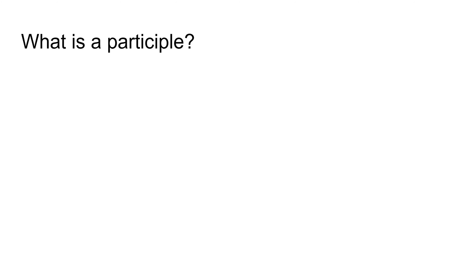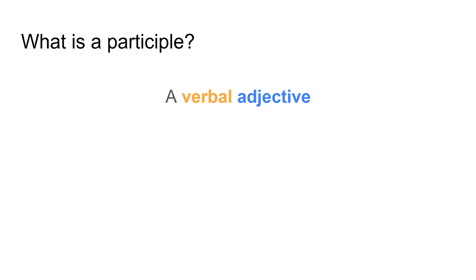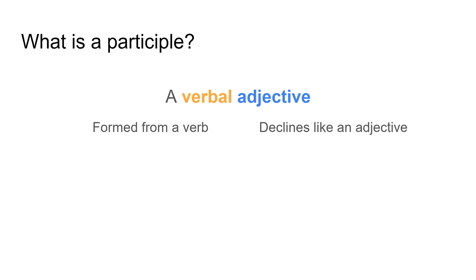So what is a participle? Well, to really break it down, it's what's called a verbal adjective. That sounds really confusing but it basically forms two parts. It's formed from a verb — so it's called verbal — and it declines like an adjective. It has a tense like a verb, but it also has a number, gender, and case like an adjective.